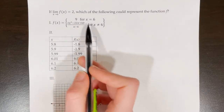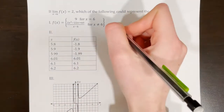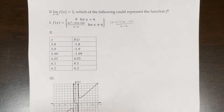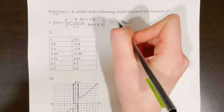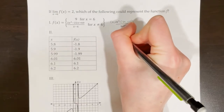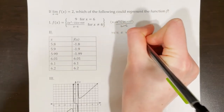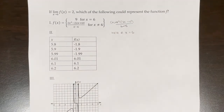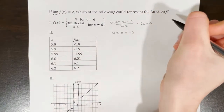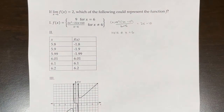This is a rational function, so I need to factor first. After factoring, I see a common factor of x minus 6 in the top and bottom, so I cancel that — but that means there's a hole at x equals 6. A limit can exist at a hole. My simplified function is 2x minus 10.